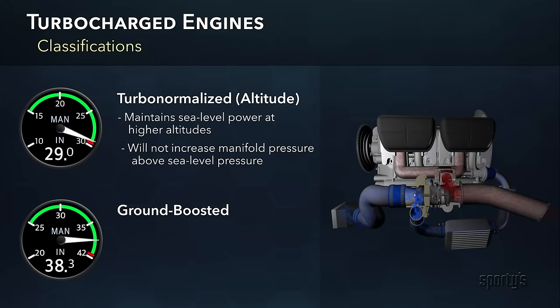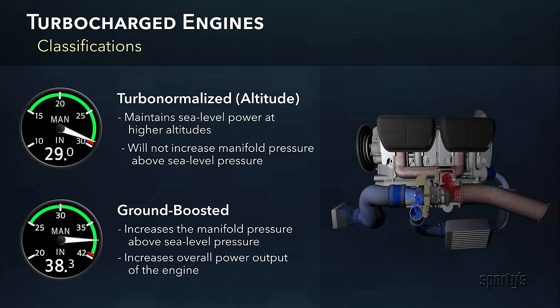The other type of turbocharged engine is called ground-boosted. A ground-boosted turbocharger will increase the manifold pressure above standard sea-level pressure. Ground-boosting directly increases the overall power output of the engine to achieve its sea-level rated power without increasing the size of the engine itself.